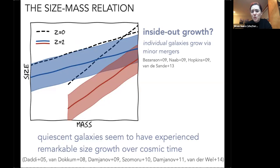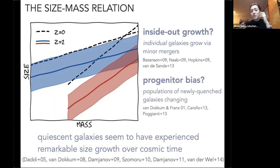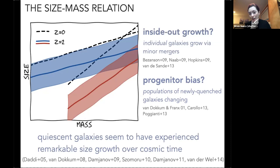Another competing explanation is that it's not individual galaxies changing their sizes, but rather an observed change in the population of quiescent galaxies over time. If quiescent galaxies that quench later are also larger, you get a change in the median size of the quiescent population not because individual galaxies are actually growing, but because the population itself is changing. The field has settled on some combination of both inside-out growth and this progenitor bias, in roughly equal parts.